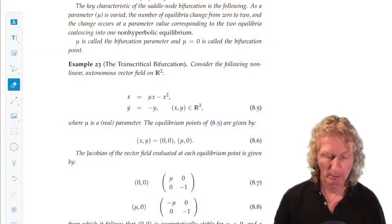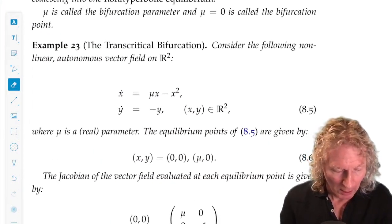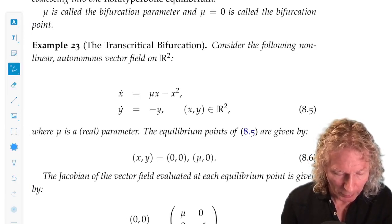In the last lecture, I gave you an example of the saddle node bifurcation, and I will continue with examples in this lecture by talking about the transcritical bifurcation.